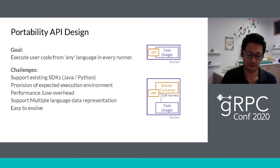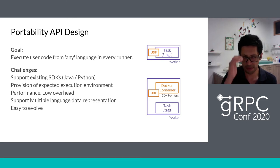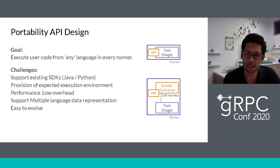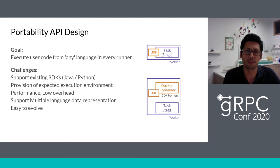This full design includes three big elements: the Runner API, which is basically an agnostic representation of what a pipeline is — a set of transformation steps; the Job API, a service to submit pipelines for execution and to manage that execution; and the FN API, which is a more complex set of services that allows us to control execution and transfer data.